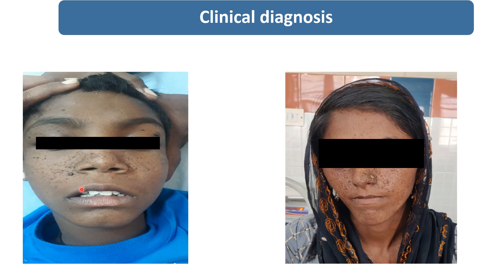Sparing the lips and present over the forehead, upper eyelid, nose and cheeks. Similarly, she is also having the same distribution and same characteristic brown color nodular lesion over the face.